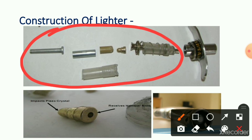These are the total parts from inside the casing of the lighter. This part is the hammer, and this part consists of a piezoelectric crystal. This face receives the hammer blow, and this face impacts the piezoelectric crystal. When you press the lighter, you require some force on the button.